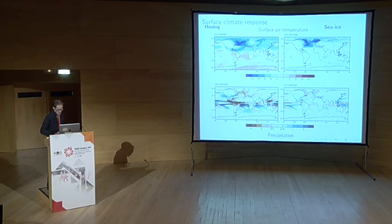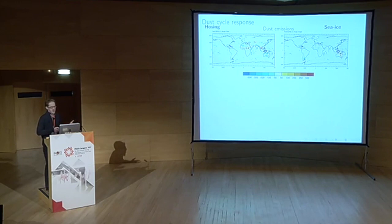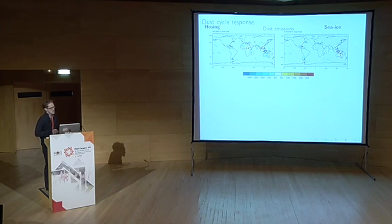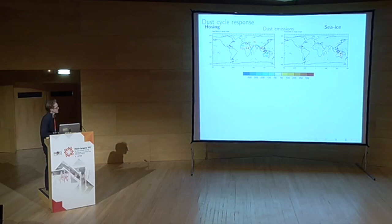The dust response: as expected, the hosing scenario produces a much stronger response, with dust emissions responding strongly especially over the Sahel and southern Saharan region. Dust emissions in Asia don't show the expected cold-state increase. In the sea ice scenario, there is very little change overall, consistent with the weaker climate fields.